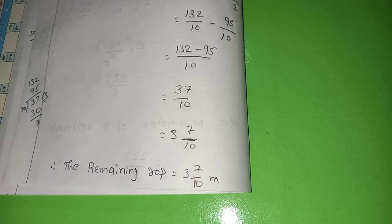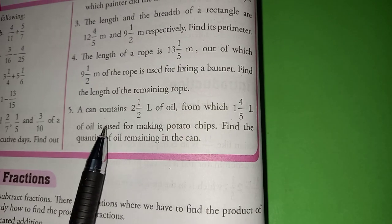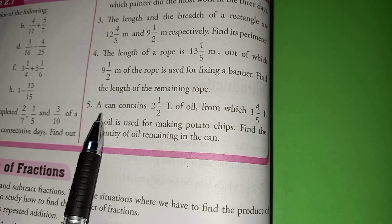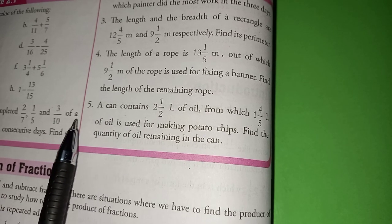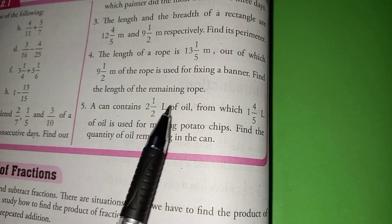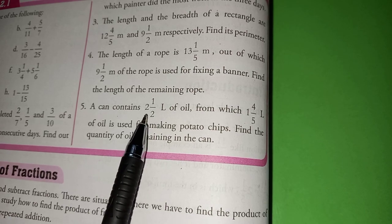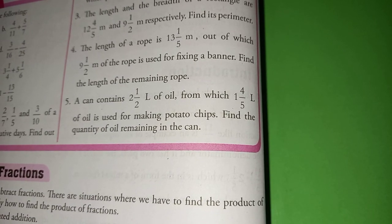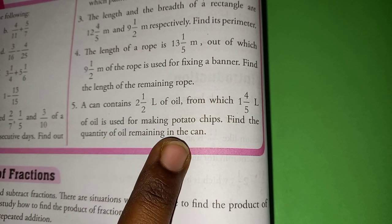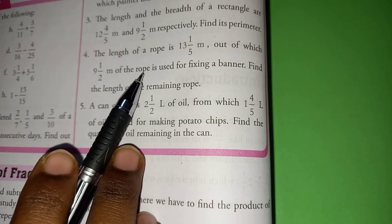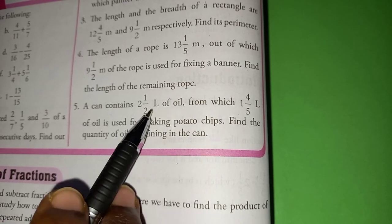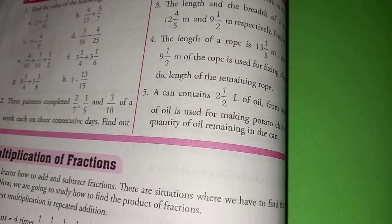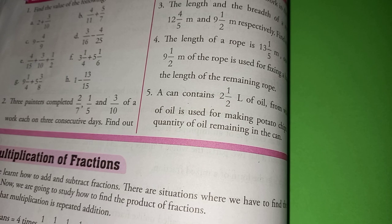Now I am going to move to the 5th question. A can contains 2 and 1 by 2 liters of oil, from which 1 and 4 by 5 liters of oil is used for making potato chips. Find the quantity of remaining oil in the can. Using the same process, subtract 1 and 4 by 5 from 2 and 1 by 2. You have to do the 5th question by your own as homework. With this, exercise 2.1 is completed. In the next video, I will explain the next exercise.